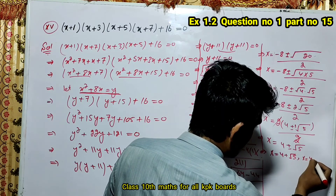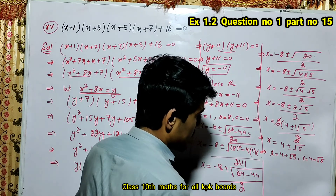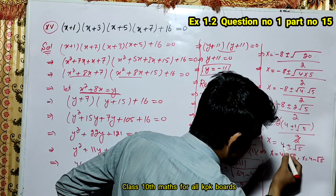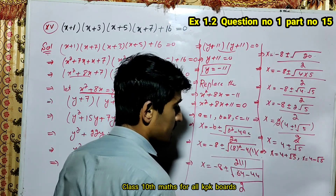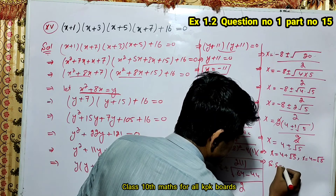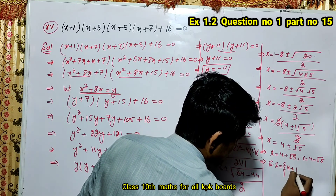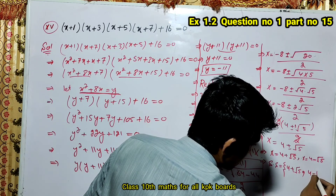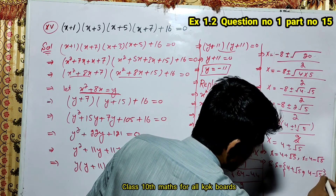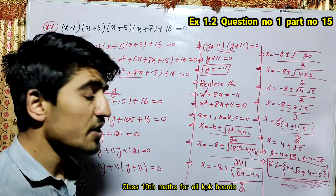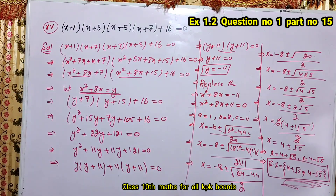Therefore x is equal to minus 4 plus root 5, or x is equal to minus 4 minus root 5.